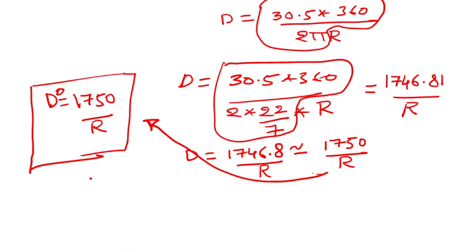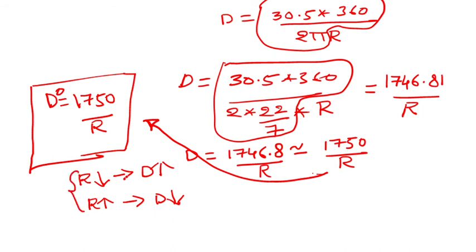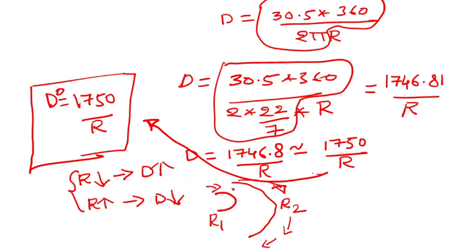They are inversely proportional. So if radius is less, degree is more; and if radius is more, degree is less. Out of these two cases, which one is safe? Consider two curves — one with more radius and one with less radius. In the case of more radius, the vehicle changes direction in a gradual manner. With less radius, the vehicle has to change direction suddenly. So more radius is safer than lesser radius.